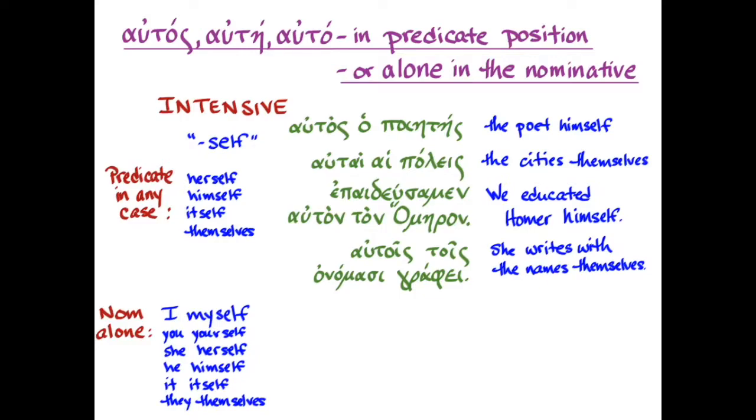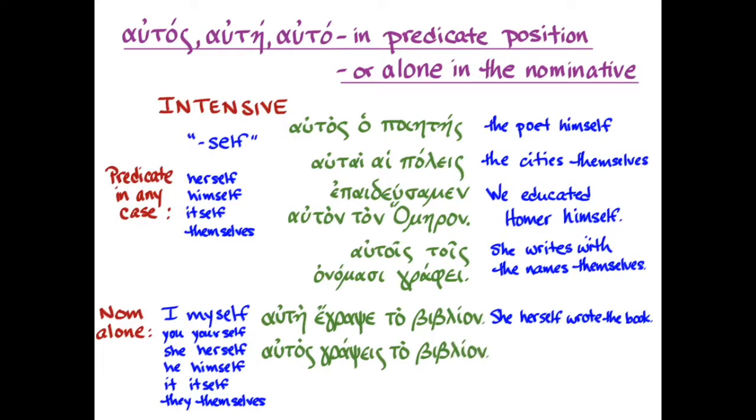So let me give you some examples. Aote agropsa ta biblion means that she herself wrote the book. Aote, all by itself in the nominative, is as if it is in predicate position to the subject that's understood in agropsa, if that helps you to think about this. But really what you need to remember is that it intensifies the subject of the verb. So another example with autos by itself in the nominative, autos grapses ta biblion. Well, this time it's masculine, but the person and number of this verb is you, it's second person singular. So I'm going to say, you yourself will write the book.